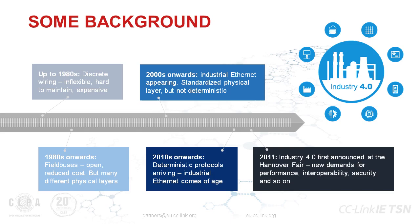Starting around the 2000s, we saw the introduction of industrial Ethernet. The benefit was that you now had a standardized physical layer, giving a more standardized way of connecting things. But we still had some drawbacks — the performance of these networks was generally not deterministic, so you never really knew when something was going to happen. Around the 2010s, deterministic protocols started to be introduced, such as CC-Link IE, PROFINET, and others, which put a deterministic layer on top of Ethernet. At this point, Ethernet really started to get going in automation, because we now had pretty much everything we needed.